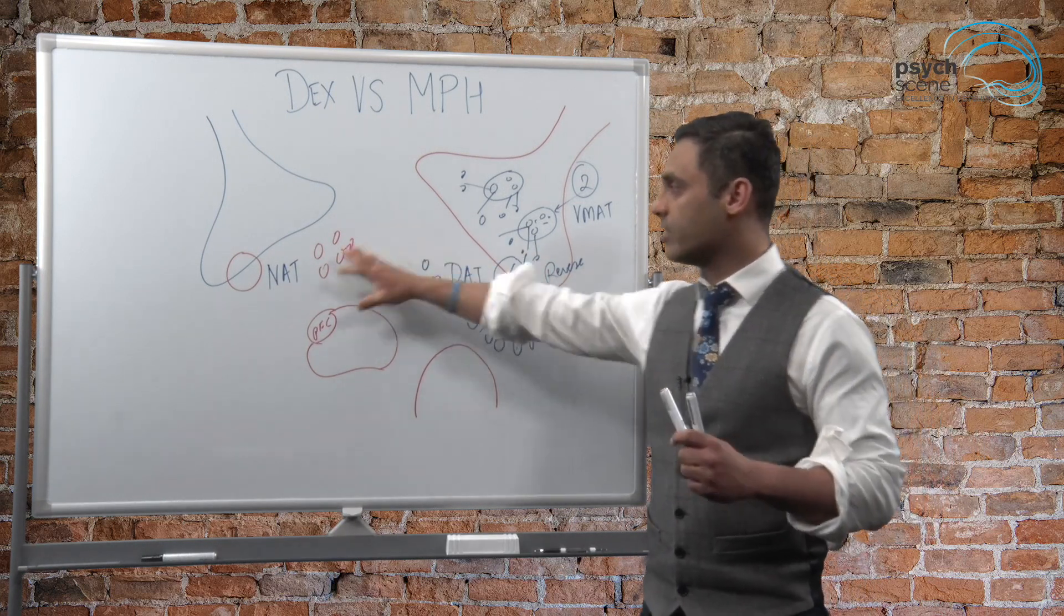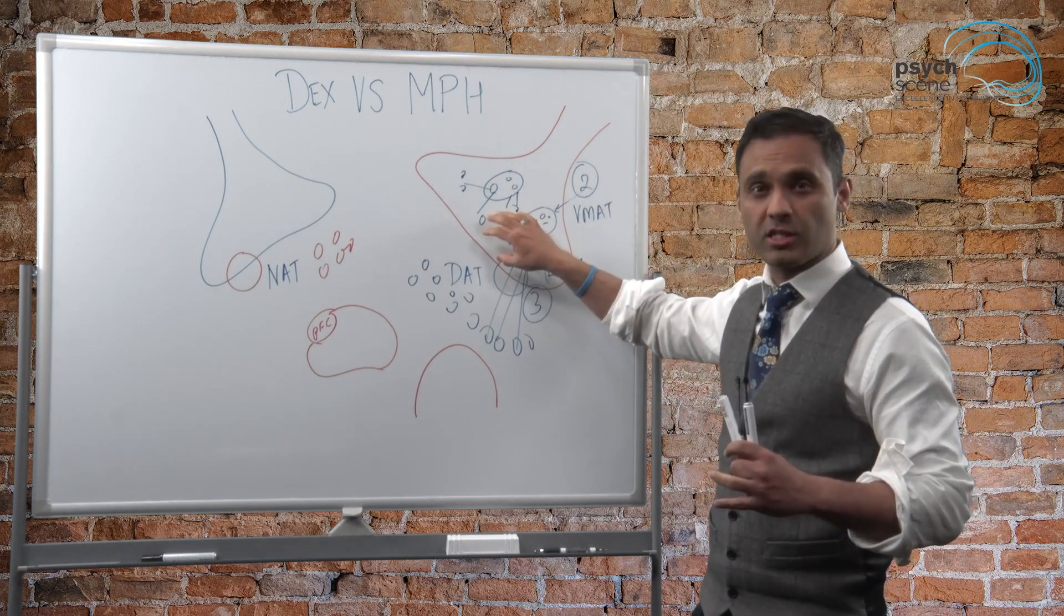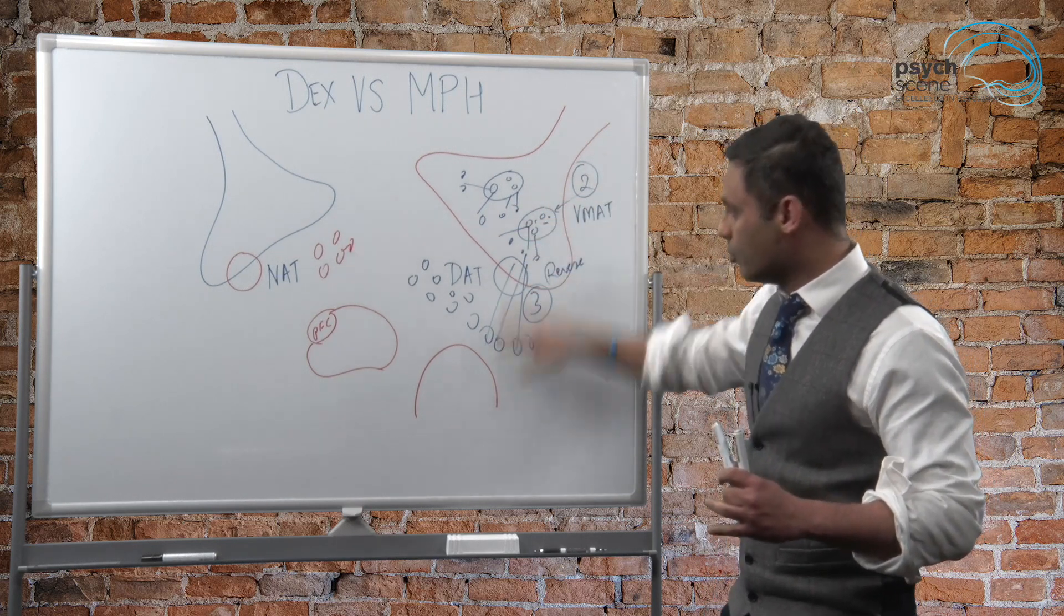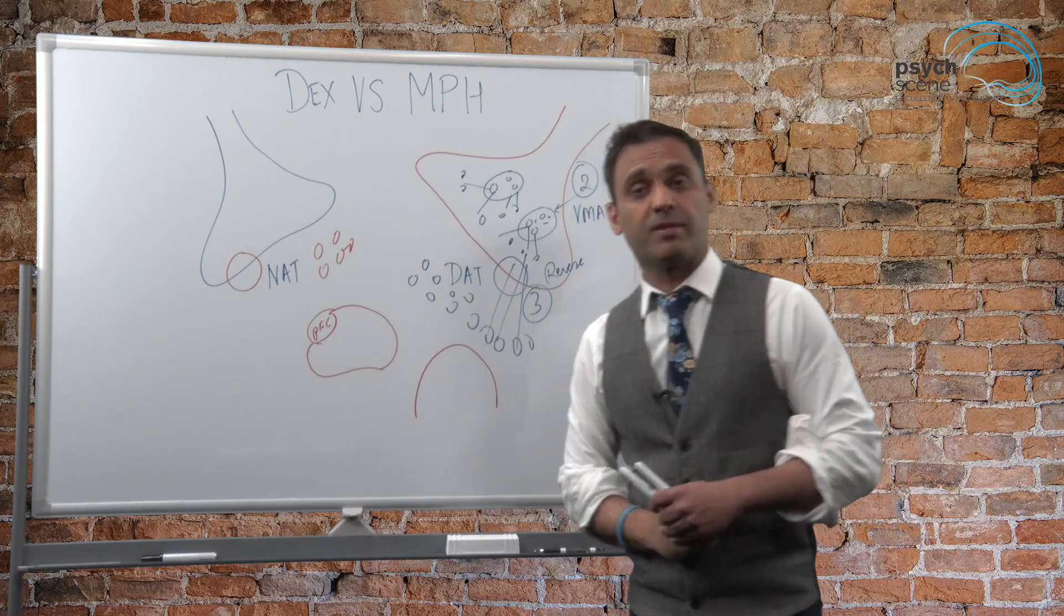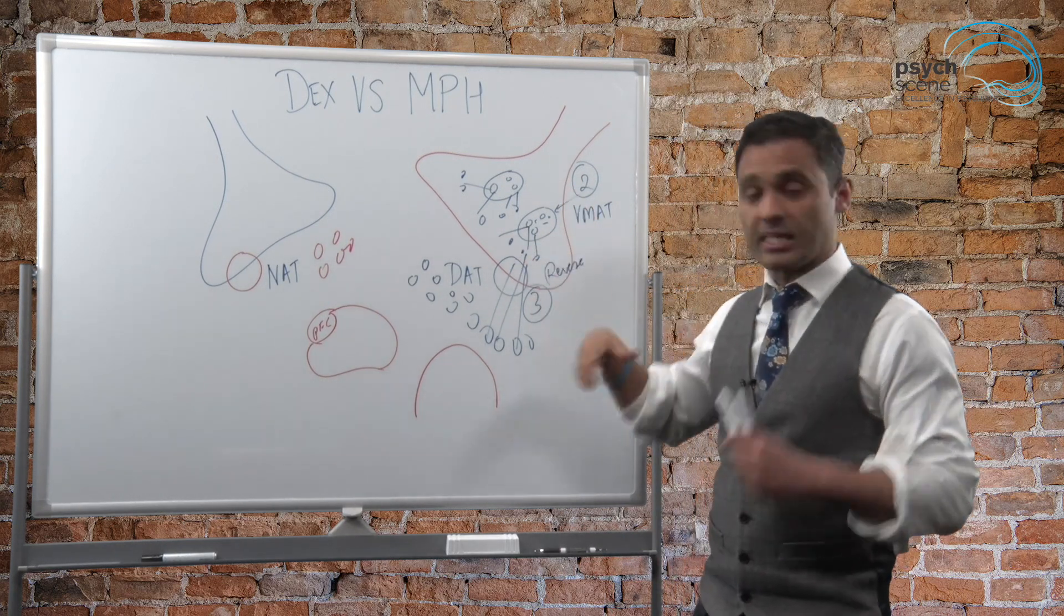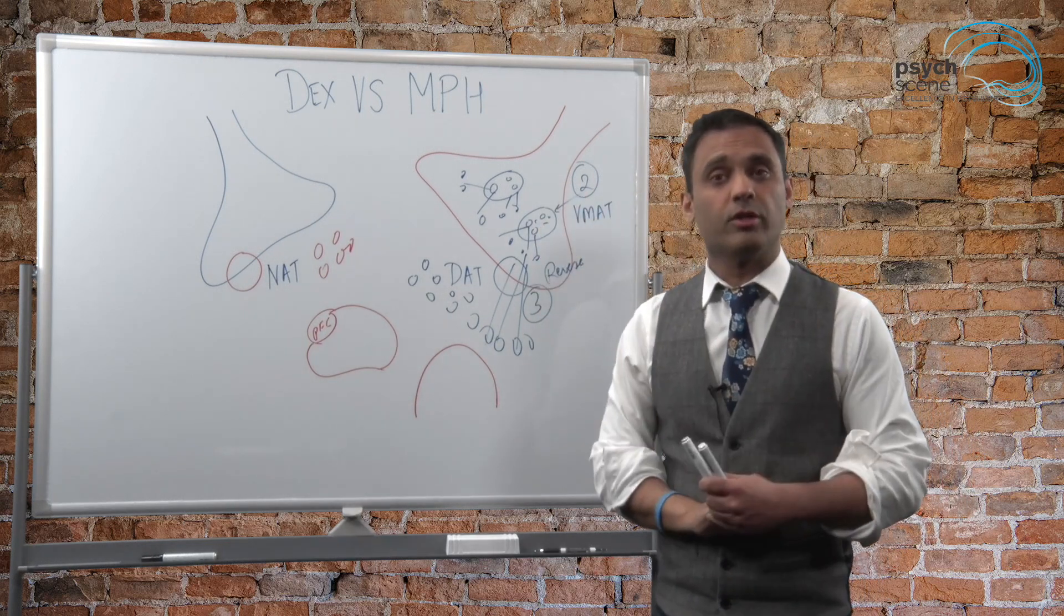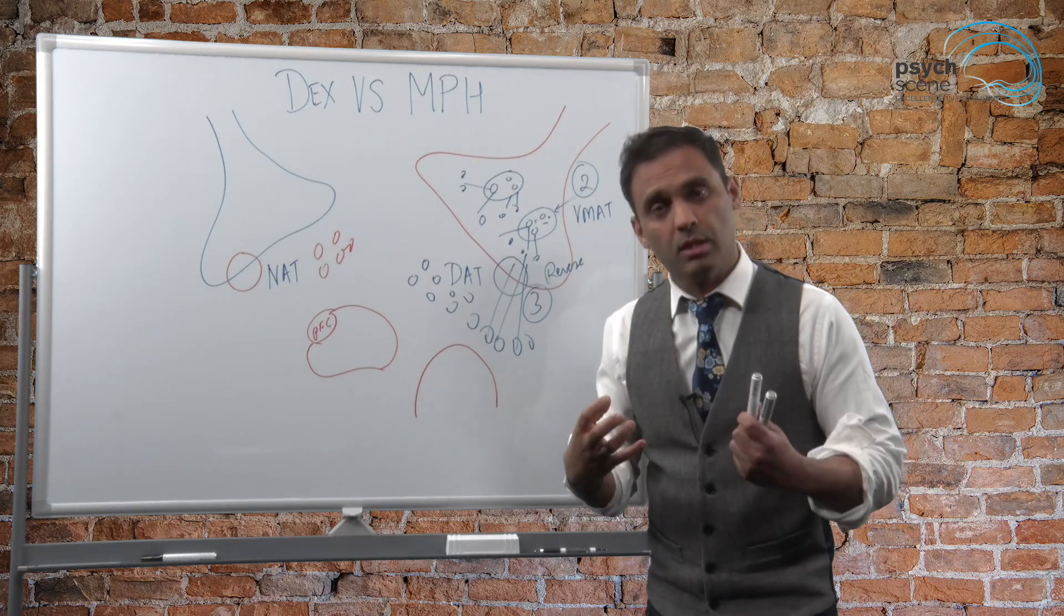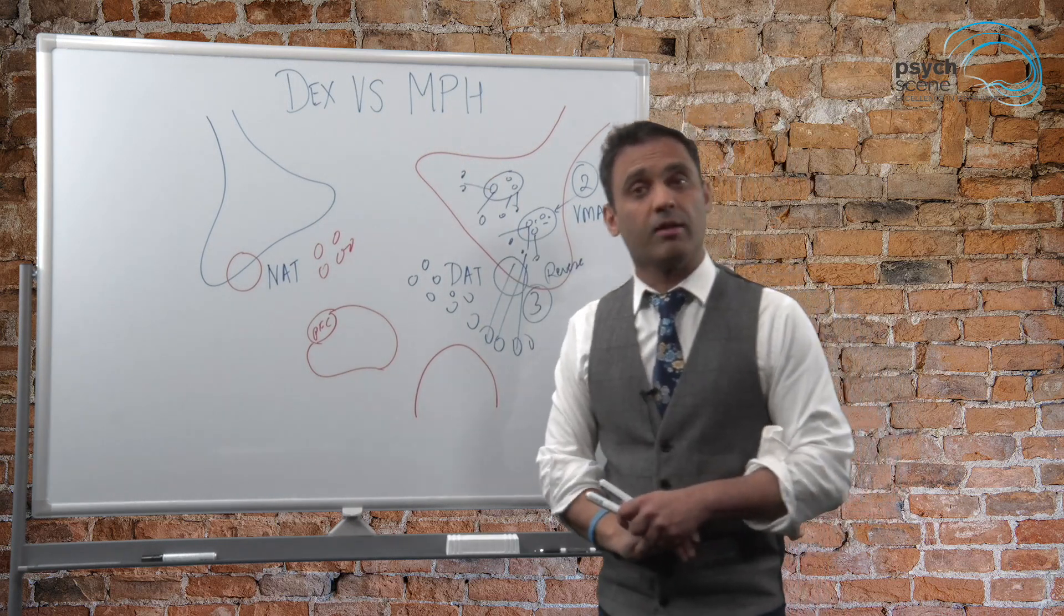So you can see there are these triple whammy effects, not only blocking DAT and NAT, so you get noradrenaline and dopamine, but then compete with VMAT, push it into the cytosolic space, displace it, and then further through reverse dopamine transporter inhibition, you push it out further, lots more dopamine into the synaptic cleft. What does that tell us? That's why the euphoric effect is there as well, because of this super extra release of dopamine. So what it tells us is that dexamphetamine or amphetamines are much more potent medications or substances compared to methylphenidate.